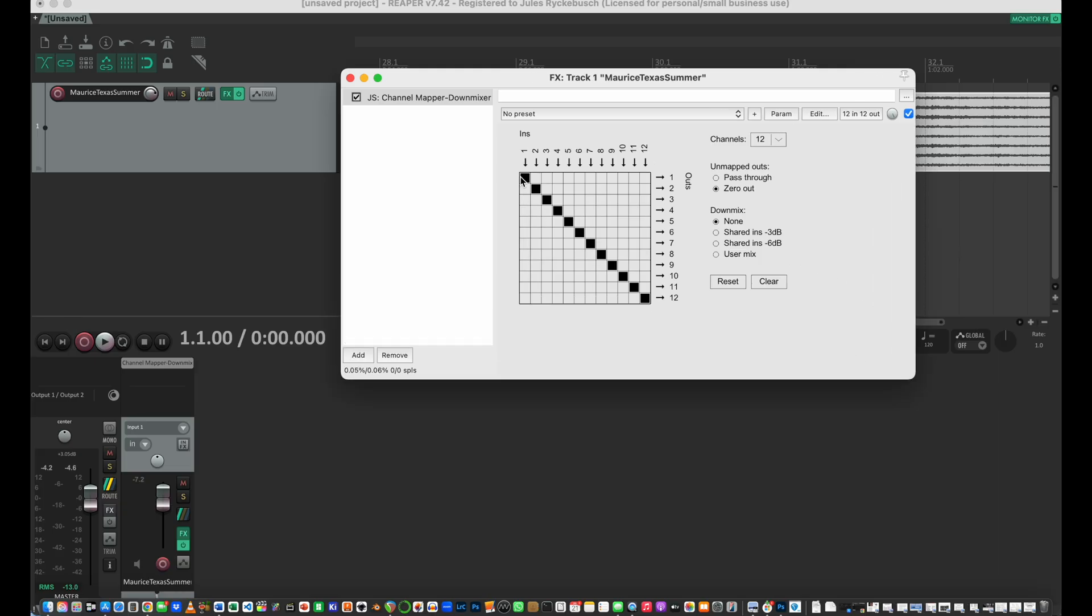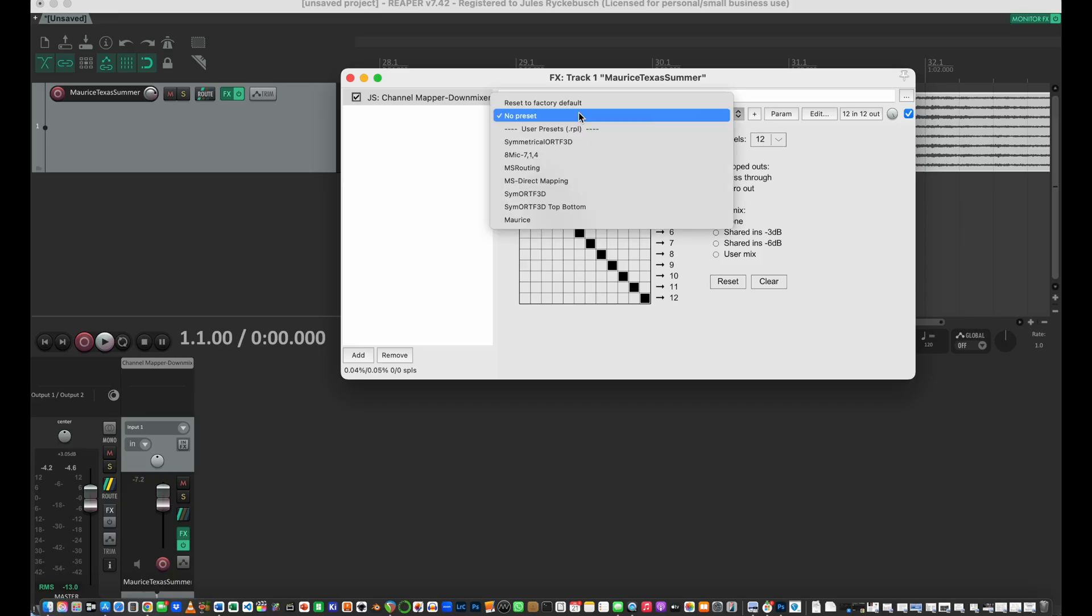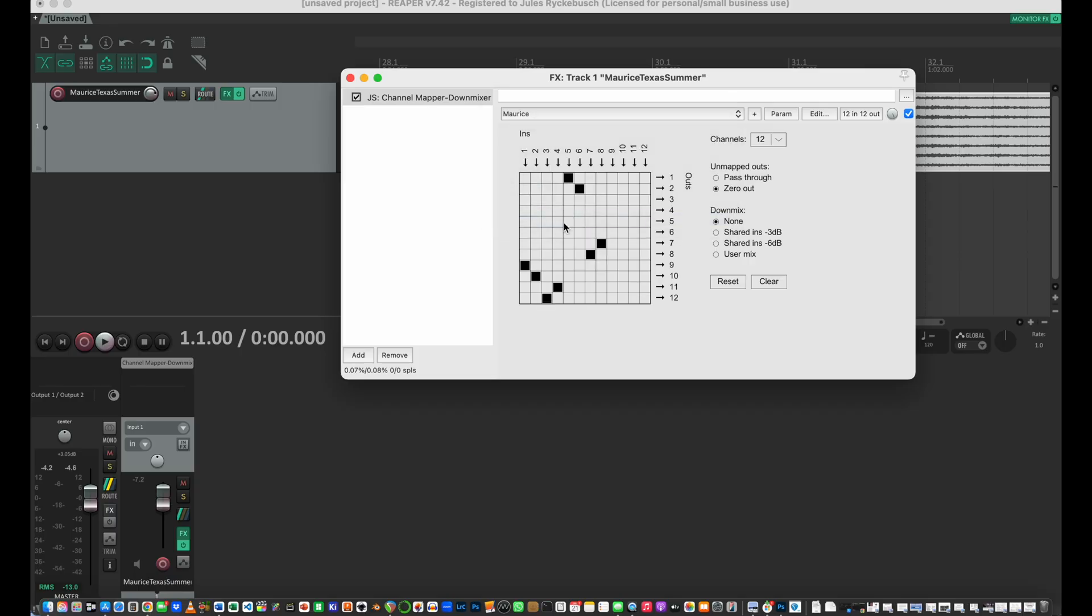So here's what we have. By default, it just maps channels one through 12 inputs to outputs one through 12. And I have a preset setup for Maurice that actually maps the microphones directly to the corresponding channels. So remember, mics one through four are actually our height microphones. So mics one and two map to height left and right front, and then three and four map to height rear left and right. And then five and six map directly to outputs one and two, main, I like to call it ear level left and right.